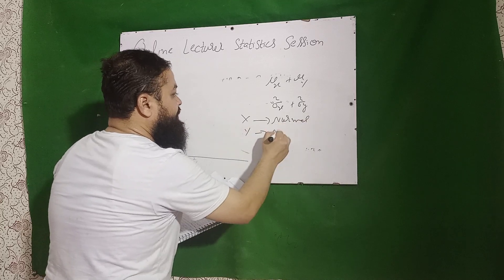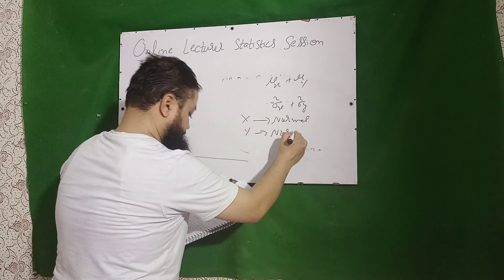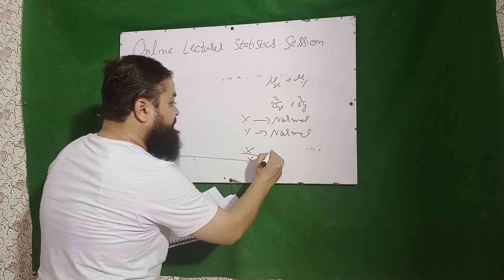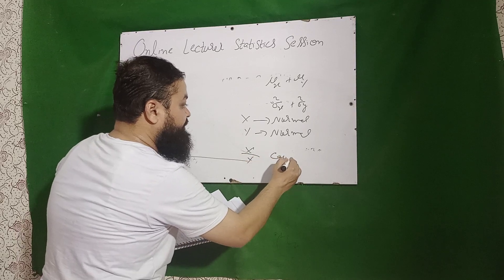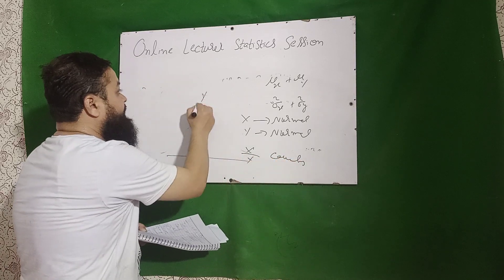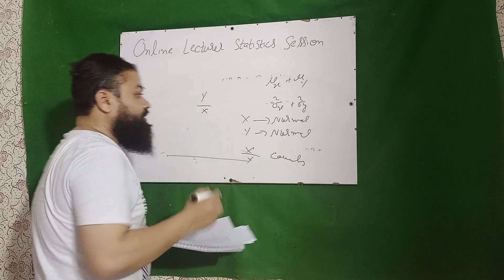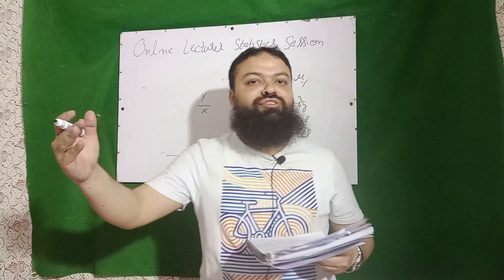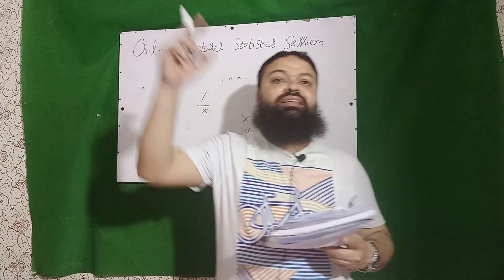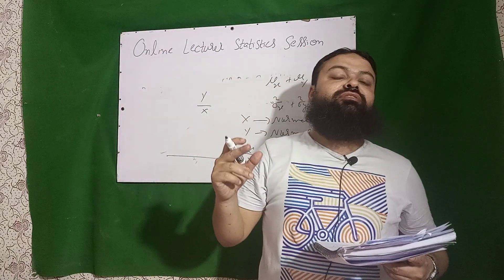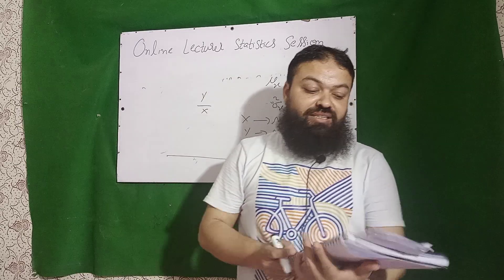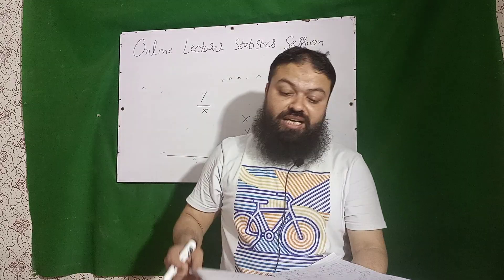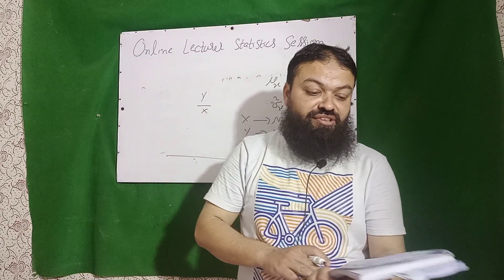If X follows normal distribution and Y follows normal distribution, then X over Y becomes Cauchy distribution. Similarly, Y over X also follows Cauchy distribution — the ratio of two standard normal variables is Cauchy.